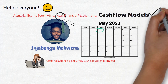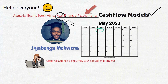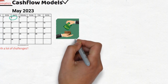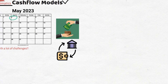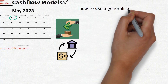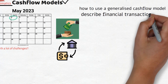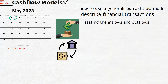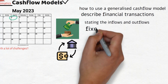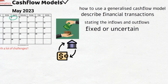Cash flow models are an essential part of financial mathematics. They are used to describe financial transactions and help us understand how money flows in and out of different investments and financial instruments. In the exam, we will be expected to describe how to use the generalized cash flow model to describe financial transactions, including stating the inflows and outflows in each future time period and discussing whether the amount or timing are fixed or uncertain.